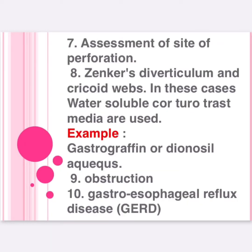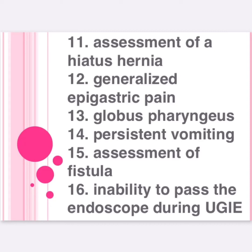Indications continued: Seven, assessment of site of perforation. Eight, Zenker's diverticulum and cricoid webs — in these cases, water-soluble contrast media are used, such as Gastrografin or Dionosil. Nine, obstruction. Ten, gastroesophageal reflux disease (GERD). Eleven, assessment of a hiatus hernia. Twelve, generalized epigastric pain. Thirteen, globus pharyngeus. Fourteen, persistent vomiting. Fifteen, assessment of fistula. Sixteen, inability to pass the endoscope during upper GI endoscopy.